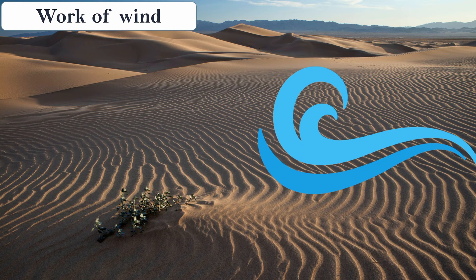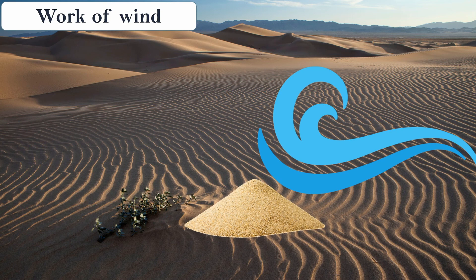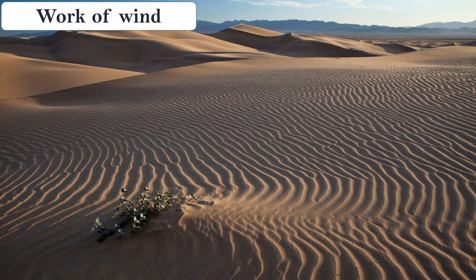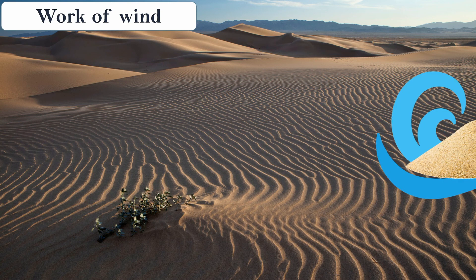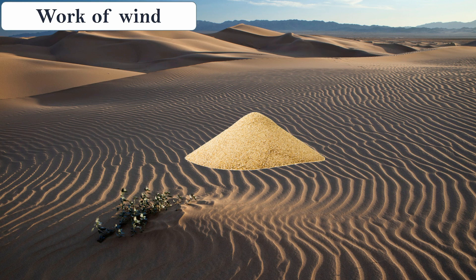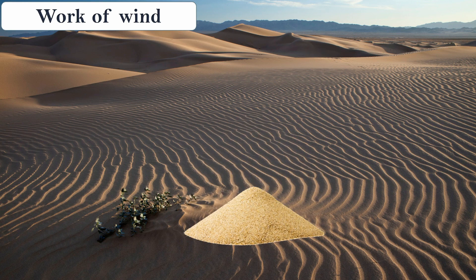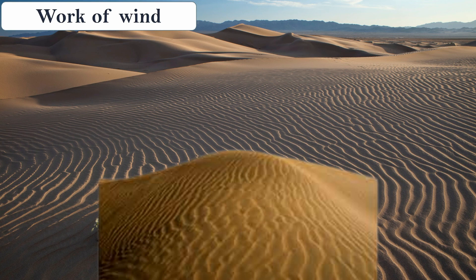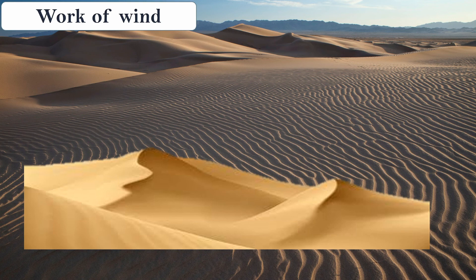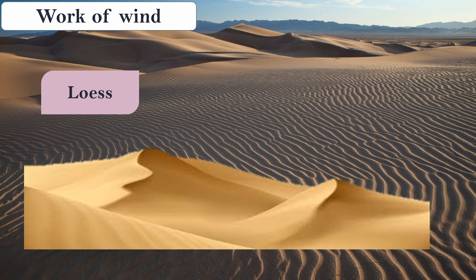When the wind blows in a desert area, it carries sand along with it. As it comes to a stop, it deposits that sand forming low hill-like structures known as sand dunes. Many sand dunes formed together nearby are called loess. Large deposits of loess are found in China and other places as well.